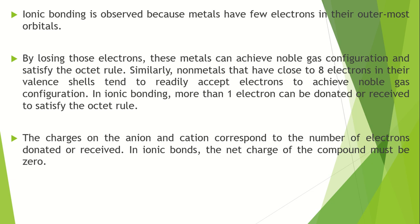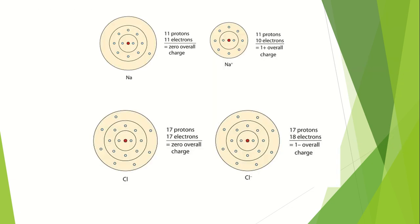The charges on the anion and cation correspond to the number of electrons donated or received. In ionic bonds the net charge of the compound must be zero. Here is the example of sodium and chlorine.